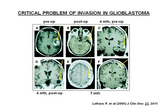Glioblastoma doesn't metastasize, but local invasion is really critical here. The local invasion occurs within centimeters from the primary tumor, and even after complete resection, tumors tend to recur quite fast. About four months after the first surgery, you see tumors coming up again, typically very close to the resection site — and then three months later, another tumor pops up.